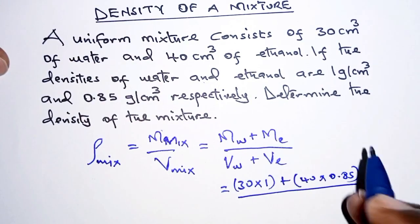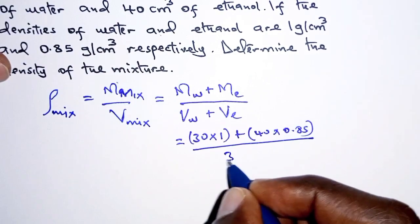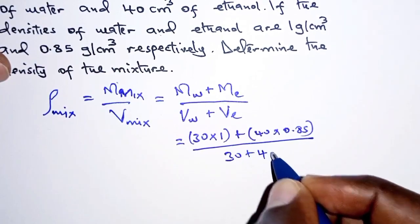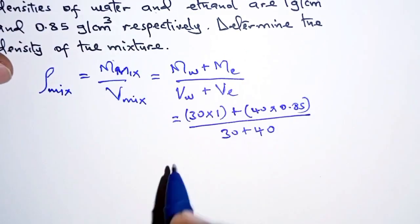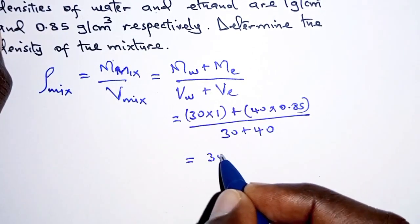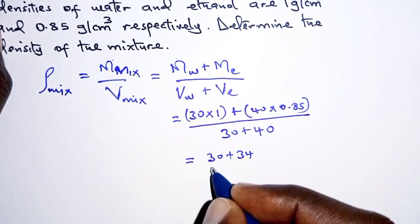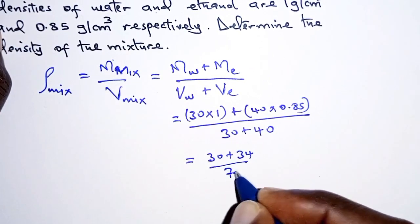And then on the denominator we add the respective volumes, so we have 30 plus 40. Now on the numerator we are going to have 30—this is 30—plus here when you work it out we get 34, and then on the denominator that is 70.